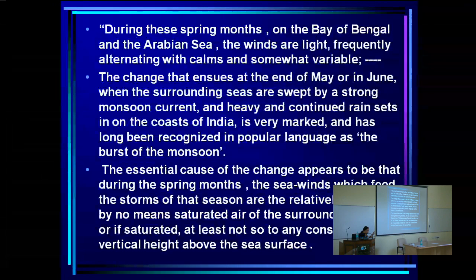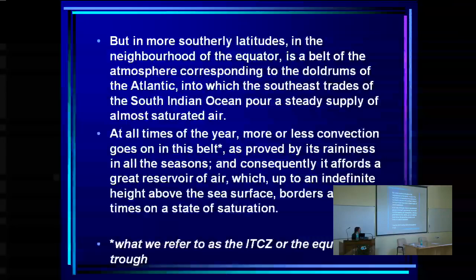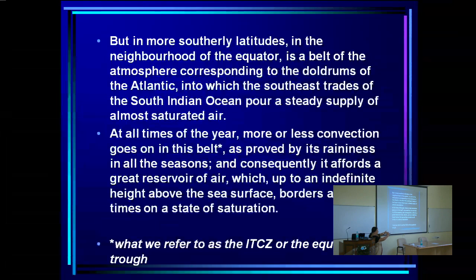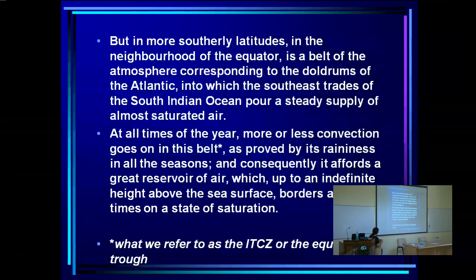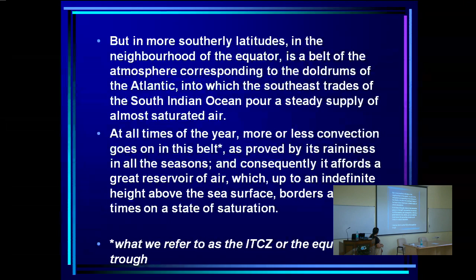Blanford explains: in spring, the winds feeding the storms are relatively damp but not saturated to any considerable vertical height. But further south, in the neighborhood of the equator, there is a belt corresponding to the doldrums of the Atlantic, into which the southeast trades of the south Indian Ocean pour a steady supply of almost saturated air at all times of the year. Convection goes on in this belt more or less continuously — this is what we also refer to as the ITCZ or equatorial trough, present in all seasons.